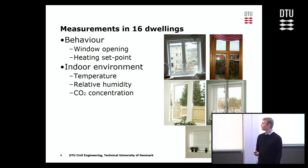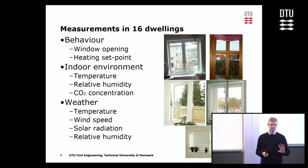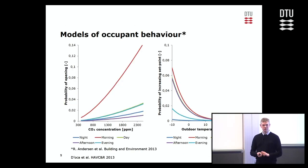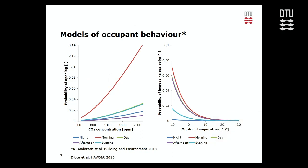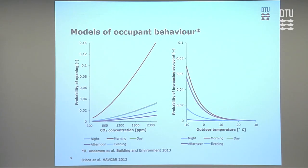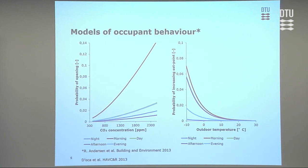We also measured indoor environment and weather. We made these models - here are examples of two models. We have the CO2 concentration and the probability of opening a window, which increases with CO2 concentration and with outdoor temperature. You might think these are quite small numbers, but this is the probability of an event occurring within the next 10 minutes, so it should be relatively small. We also have models of closing windows and turning the set point down.